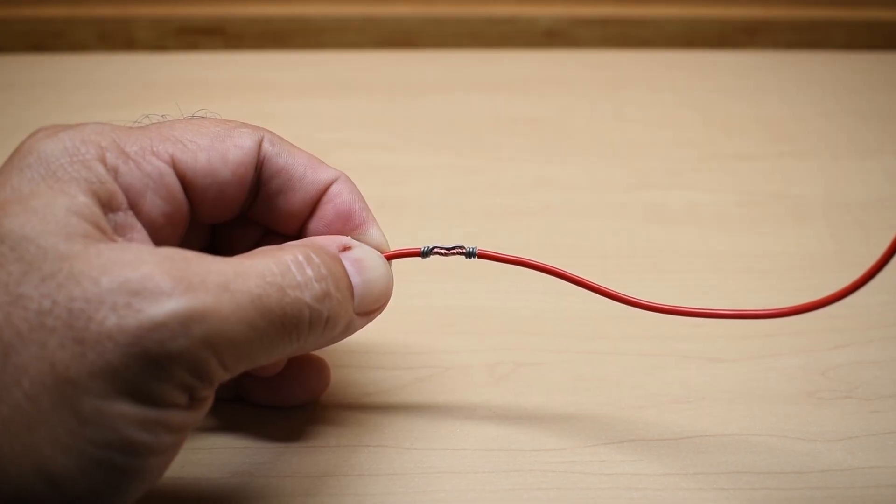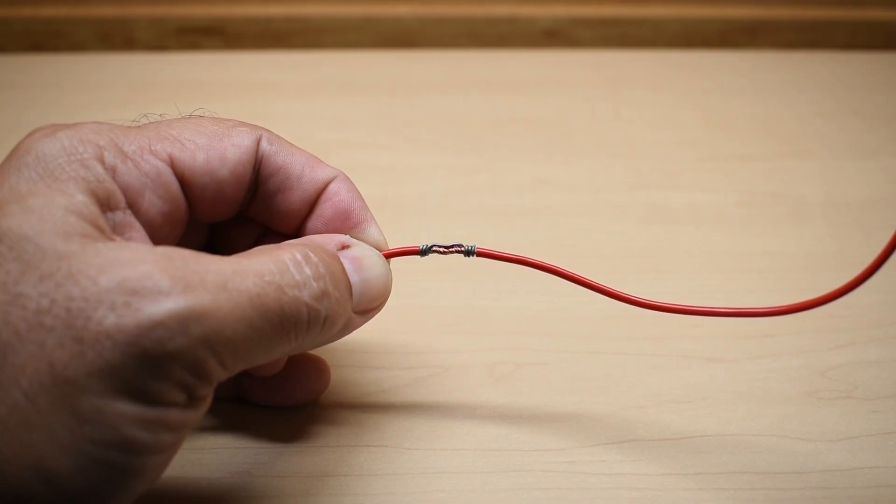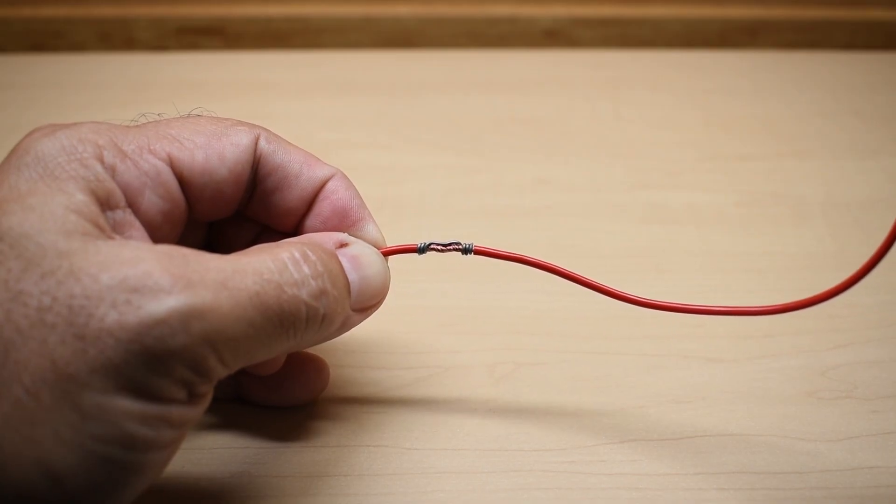This is what it looks like when it's completed. Three wraps on the left, go straight across the top, and then do three wraps on the right. Keep in mind, this does not take long to do, and once you do it a few times, it gets easier and easier.